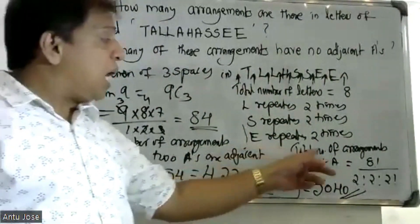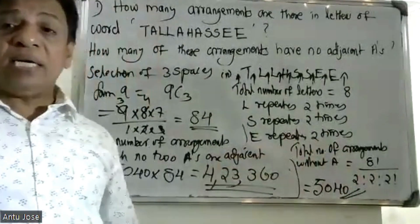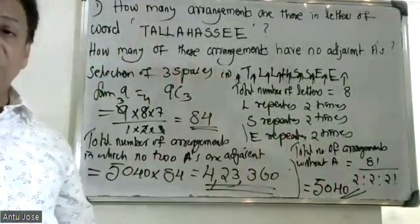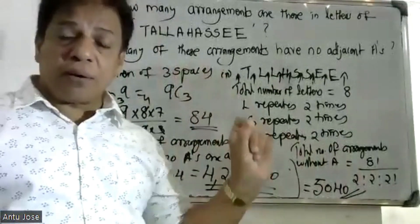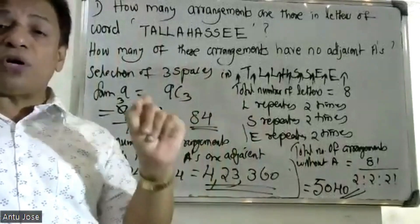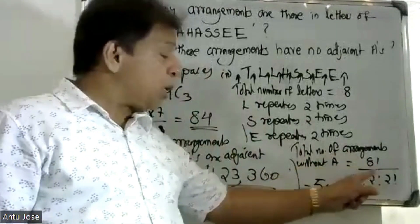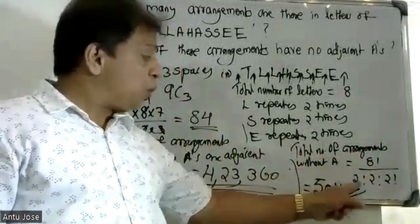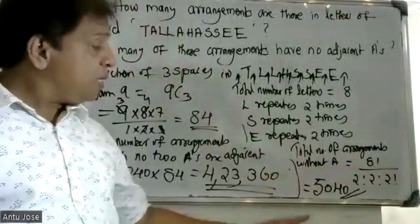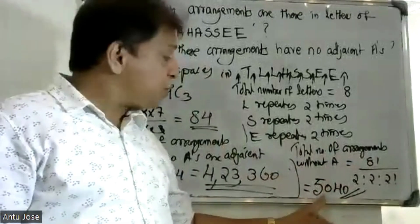Total arrangements using the formula n factorial divided by P1 factorial times P2 factorial: 8 factorial divided by 2 factorial times 2 factorial equals 5,040.